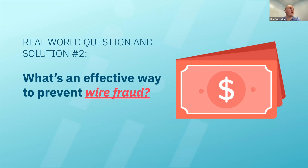We see it a lot with manual verification. For example, if you are profiling your customer and you have a clear understanding of how this customer behaves when it comes to wire transactions — you understand the history, you understand the amounts that they're sending, you understand the destinations of the wires they used to send.